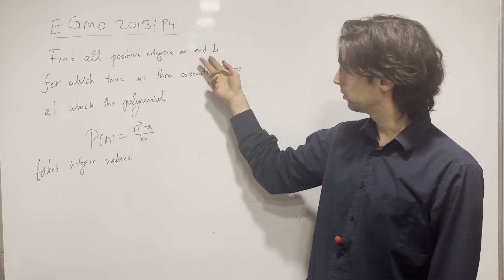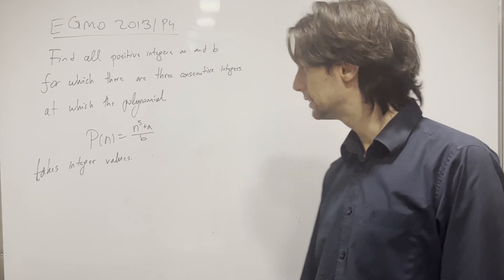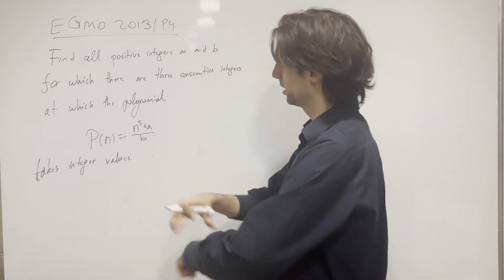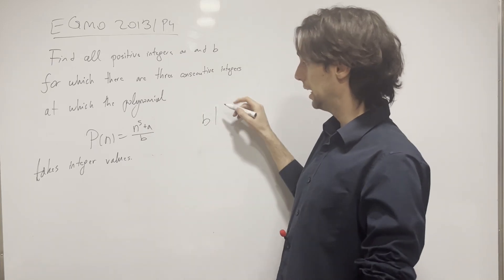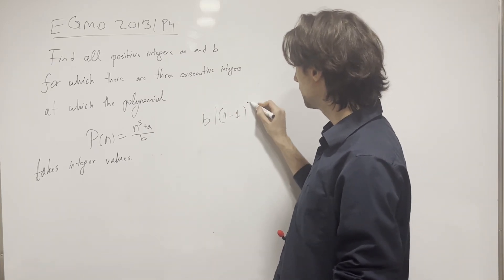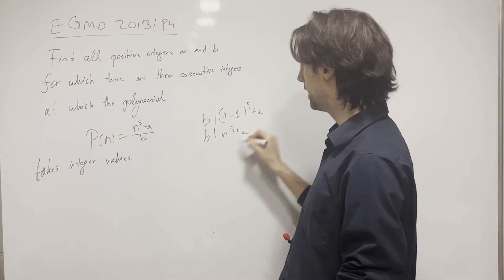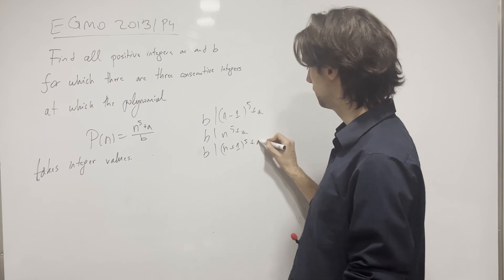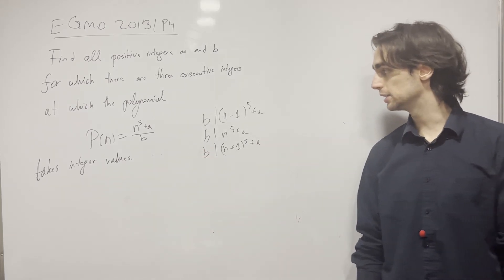So what do we have? Find all positive integers a and b such that this polynomial is an integer for three consecutive values, which means really that we're going to have an n, such that b divides (n-1)^5 + a, b divides n^5 + a, and b divides (n+1)^5 + a.